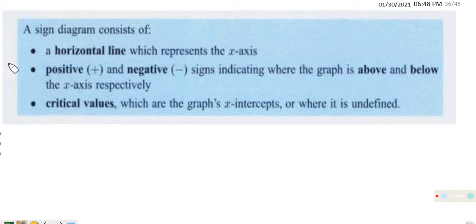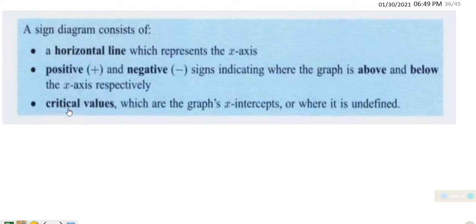When we talk of sign diagrams, a sign diagram consists of a horizontal line which represents the x-axis. It also consists of positive and negative signs indicating where the graph is above and below the x-axis respectively. It also has critical values, which are the graph's x-intercepts or where the graph is undefined.